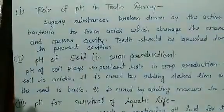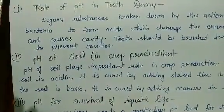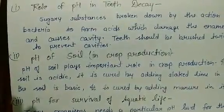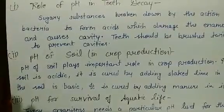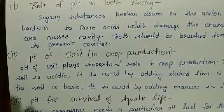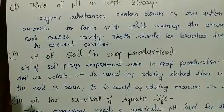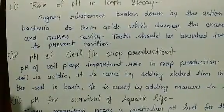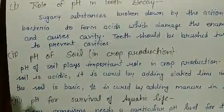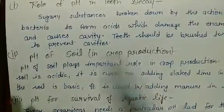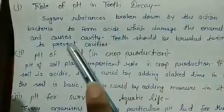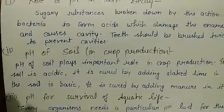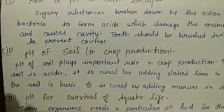Whenever we intake food, the food mixes with our saliva and forms a thin film on our teeth known as plaque. This plaque prevents saliva from reaching our teeth, and various bacteria in our mouth break down sugary substances into acids. These acids damage the enamel, which is the outermost covering of the teeth, slightly yellow in color.